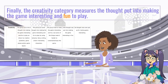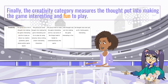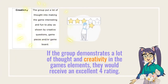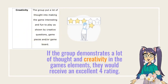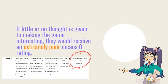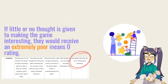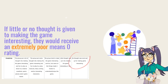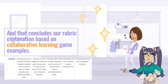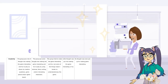Finally, the creativity category measures the thought put into making the game interesting and fun to play. If the group demonstrates a lot of thought and creativity in the game's elements, they would receive an excellent rating of 4. If little or no thought is given to making the game interesting, they would receive an extremely poor rating of 0. That concludes our rubric explanation based on the collaborative learning game example.